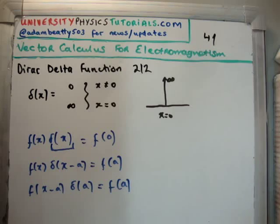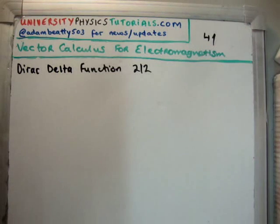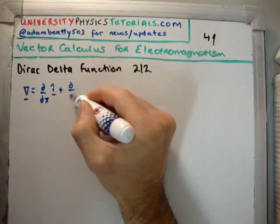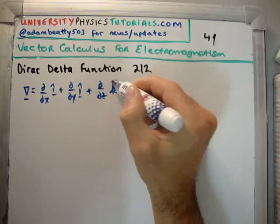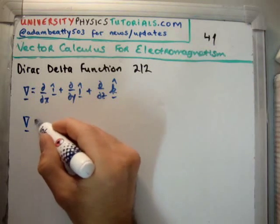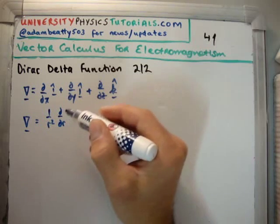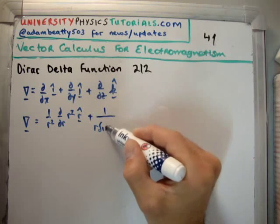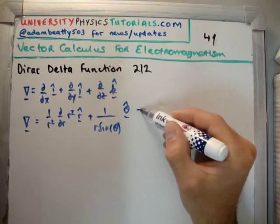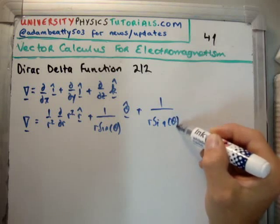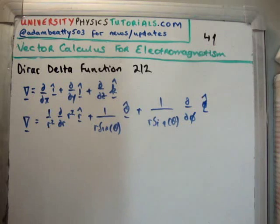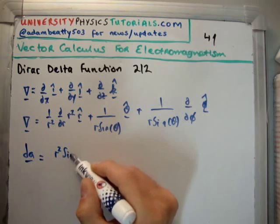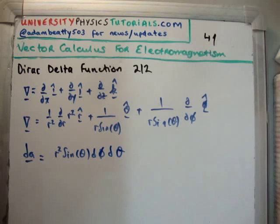From our videos on spherical polar coordinates, we found the Laplacian in rectangular coordinates can be written as del del x in the i hat direction, plus del del y in the j hat direction, plus del del z in the k hat direction. We can transform it into spherical polar coordinates. You have 1 over r squared del del r of r squared r hat, plus 1 over r times sine of theta theta hat, and we add 1 over r sine theta del del phi phi hat. In spherical polar coordinates, the infinitesimal area element is r squared sine of theta d phi d theta.